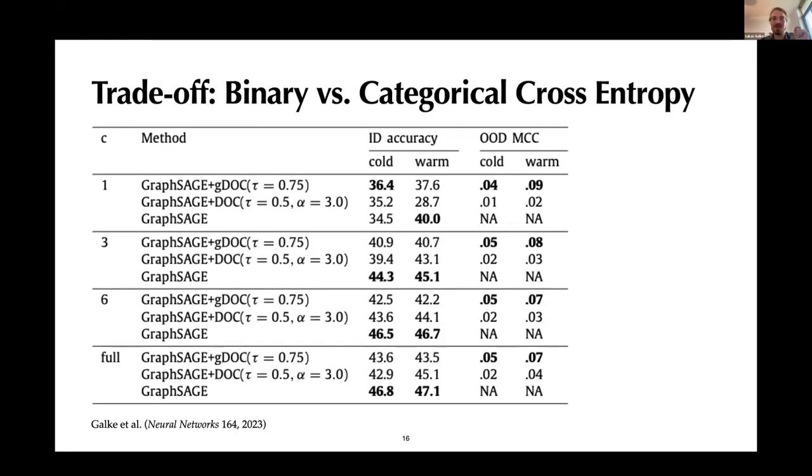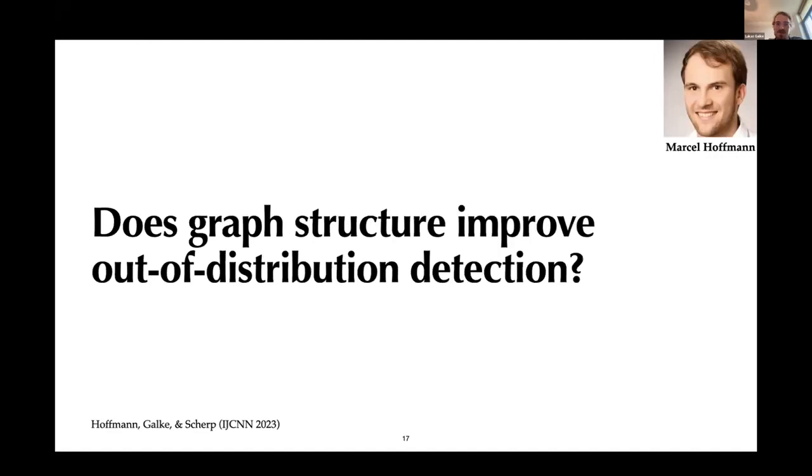Binary versus categorical cross entropy. So we had to switch for the out of distribution detection as a loss function. And one important thing to note is also that it does harm the normal classification results a bit. But on the other side, of course, you get a bit of advantage that you have a more robust system that can also detect when there is an out of distribution case. A bit looking at the time, I will move over that quickly. But if you have questions in the end, I'm happy to go deeper into that.